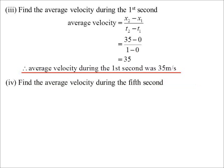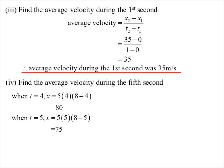During the fifth second, okay, well, when t equals 4, because the fifth second will go from t equals 4 to t equals 5, it's at 80, and when t equals 5, it's at 75. So the average velocity would be 75 minus 80. And you'll see we actually get a negative number.